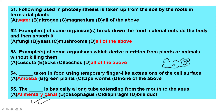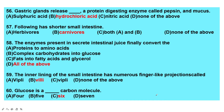Bile duct is the duct which produces bile juice. Gastric glands release a protein-digesting enzyme called pepsin and mucus. They also release hydrochloric acid — that is the answer. Shorter small intestine is present in carnivores.